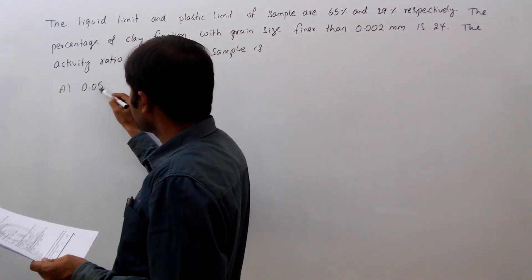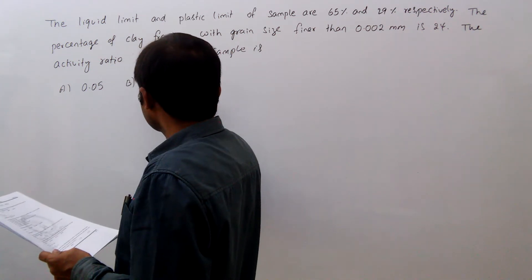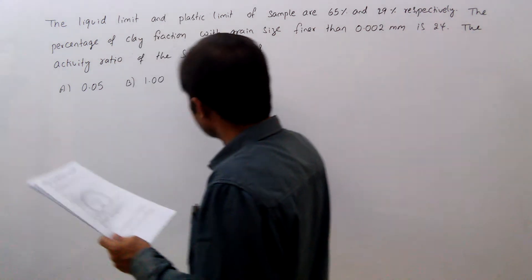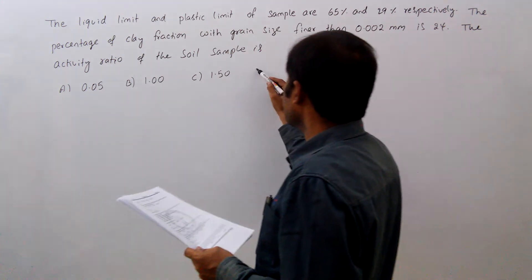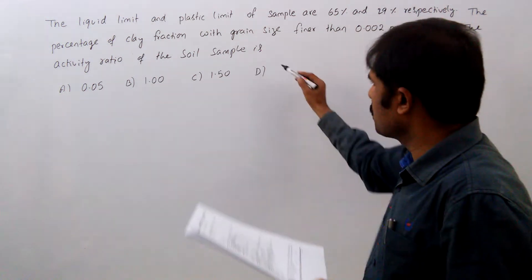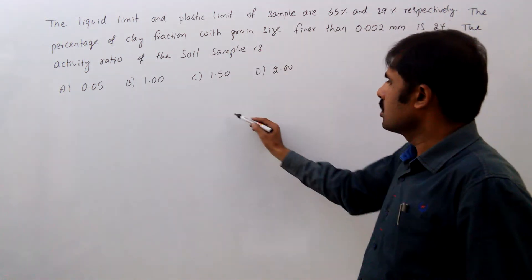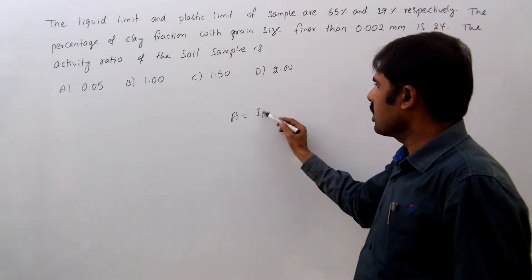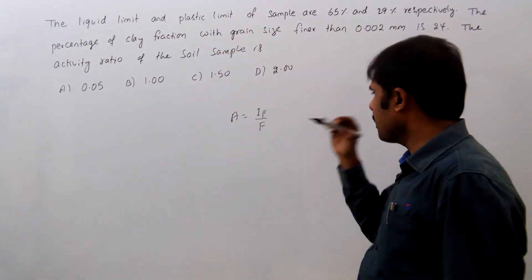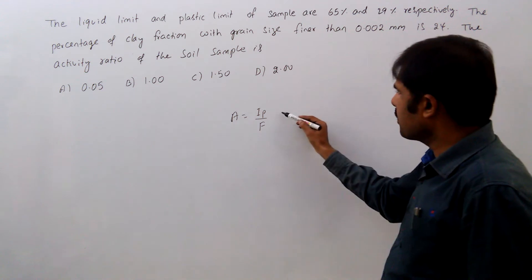option b) 1.00, option c) 1.50, option d) 2.00. So activity equals Ip by F. Plastic limit, sorry, plasticity index.